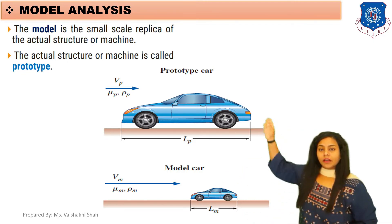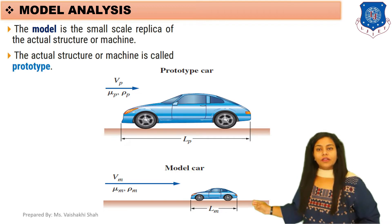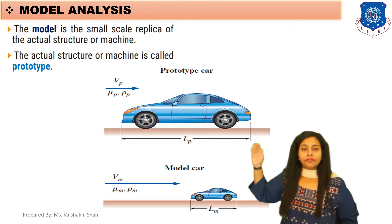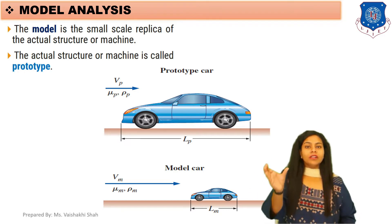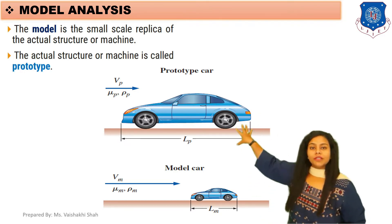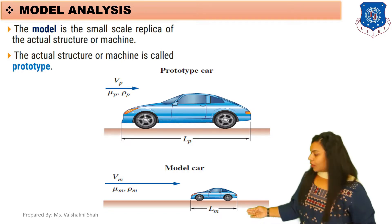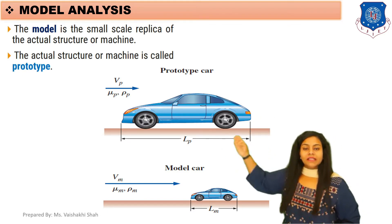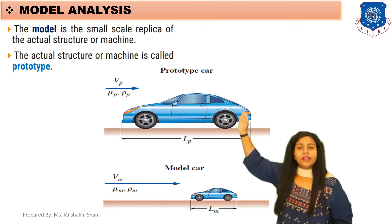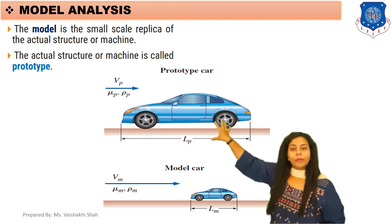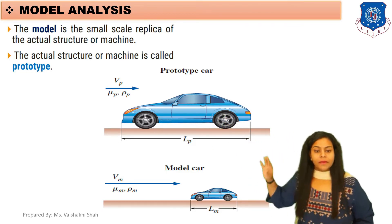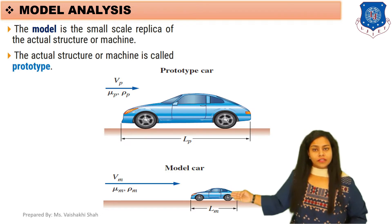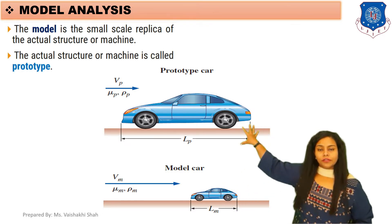Here you can see two cars. This car is your prototype and this is your model car. The actual car is your prototype, but before designing any car, machine, or structure, we first design a small scale replica or copy of that original machine. In the prototype car, the length is lp, velocity vp, viscosity mu p, and density rho p. For the model, we consider length lm, velocity vm, viscosity mu m, and density rho m.